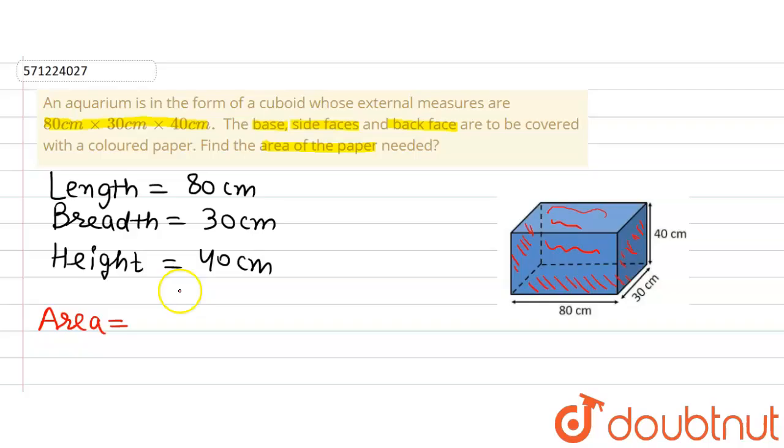So area of the base will be 80 multiplied by 30 plus side faces. There are two side faces of equal dimensions with length 40 and breadth 30. So we will write 2 multiplied by 40 multiplied by 30 plus...